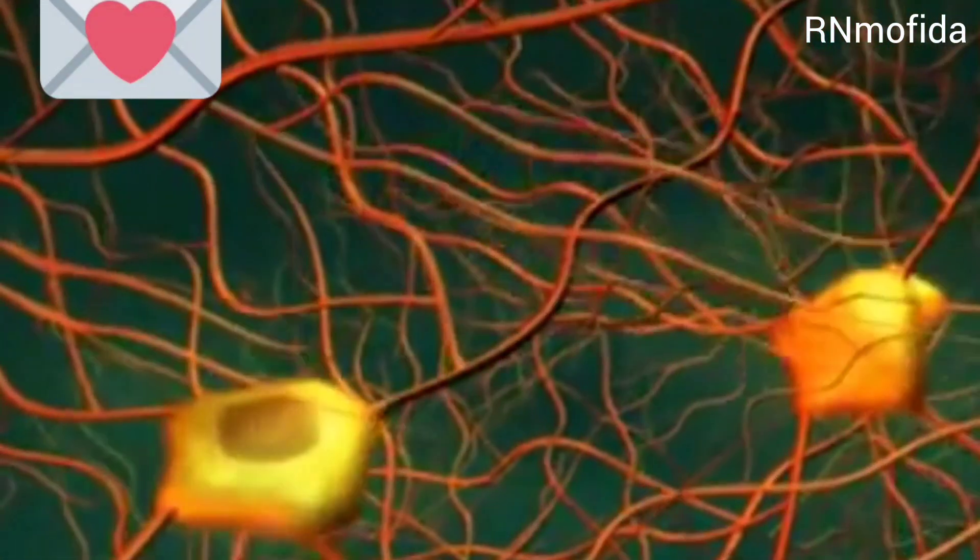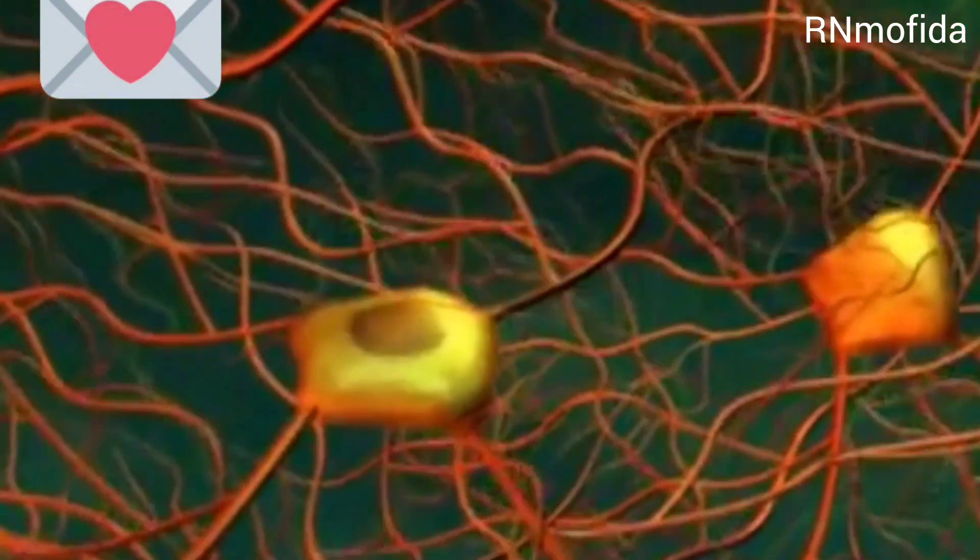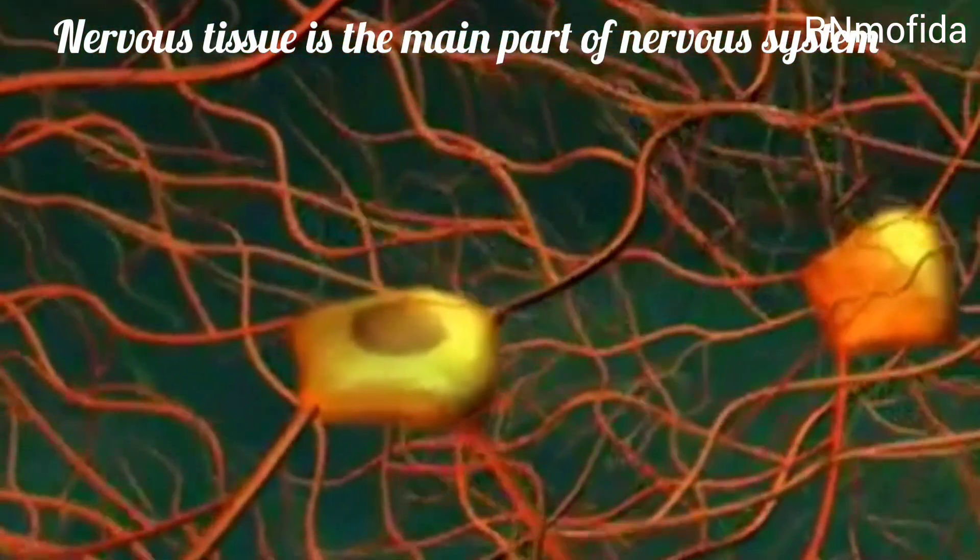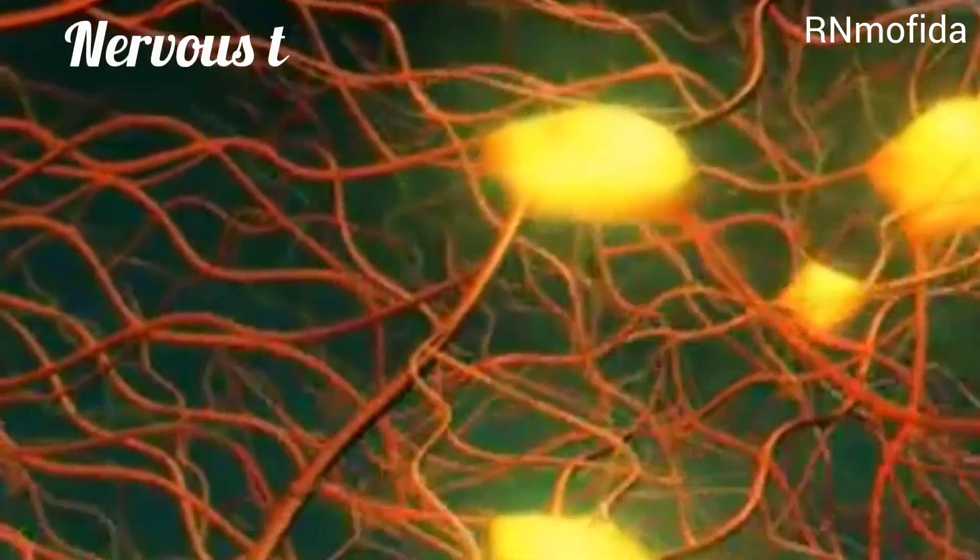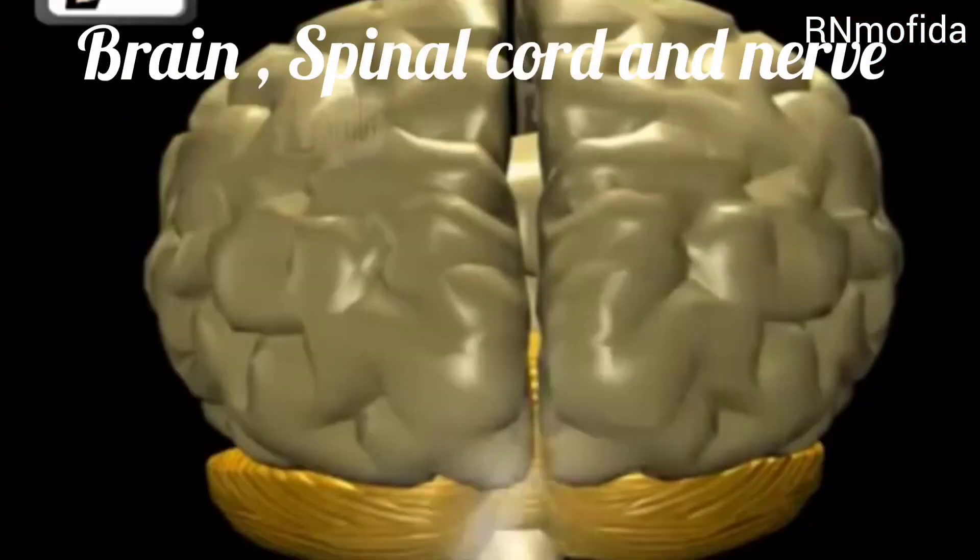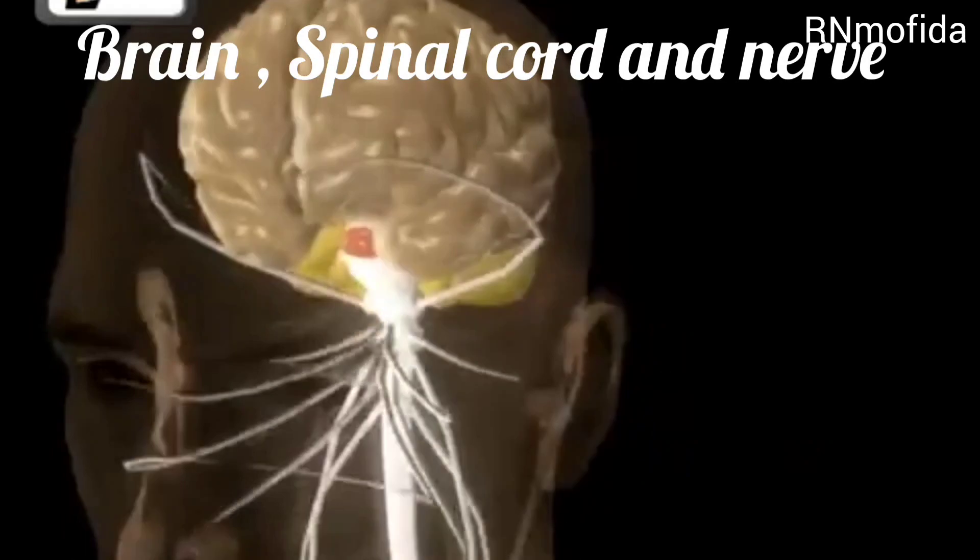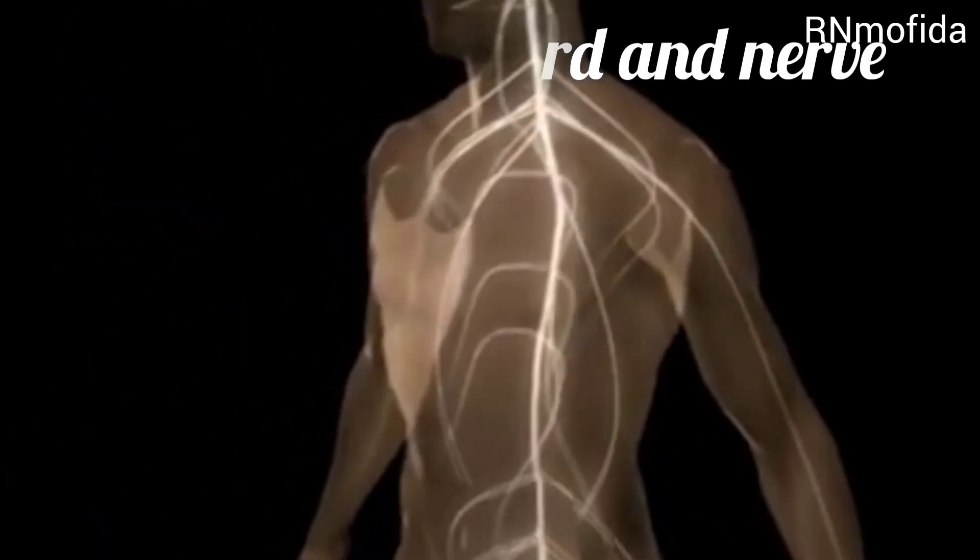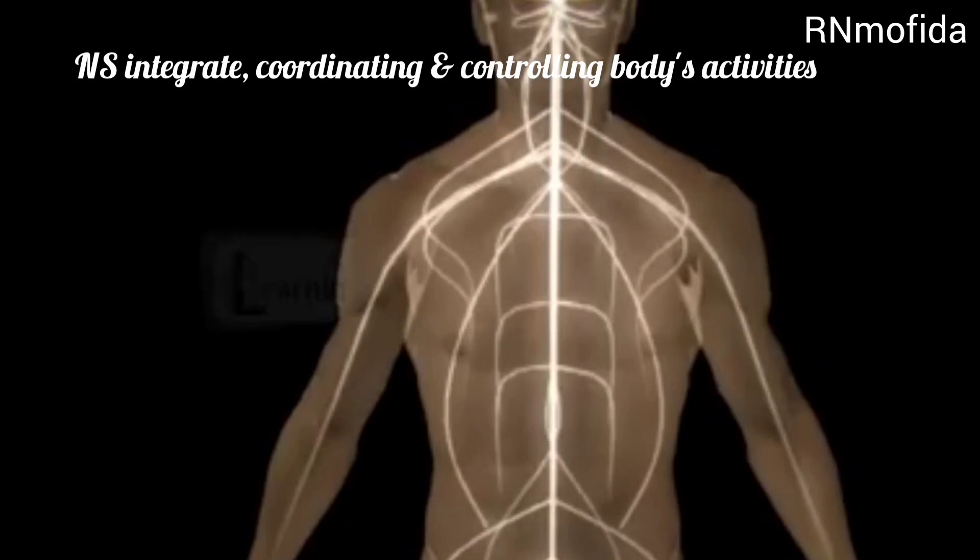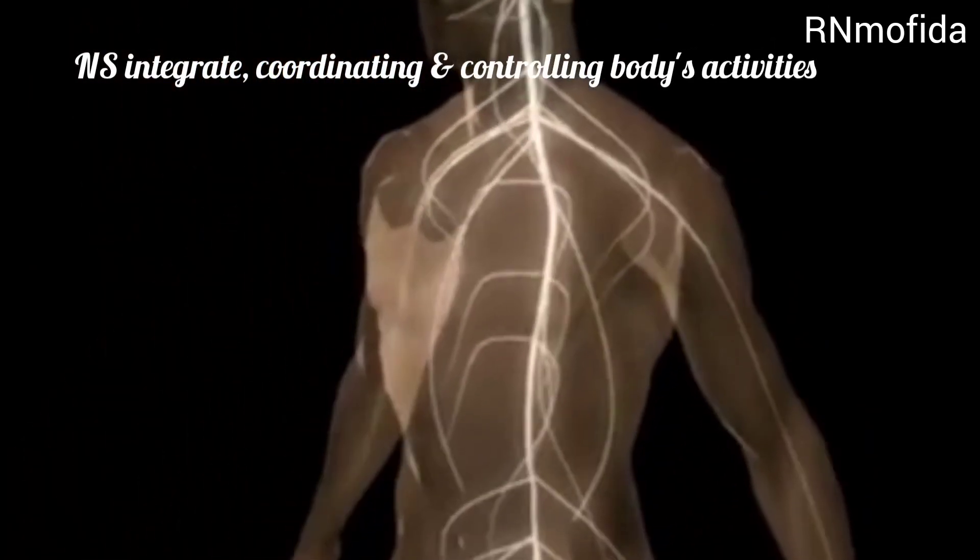In this module we are going to learn about nervous tissue. Nervous tissue is the main part of the nervous system, mainly found in the brain, spinal cord, and nerves. The nervous system integrates, coordinates, and controls the body's activities.